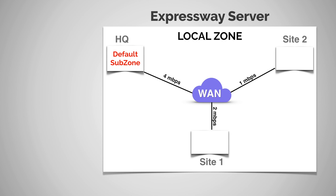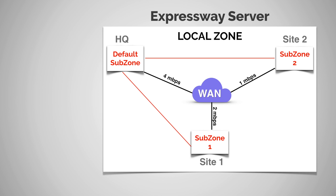In our Expressway, we're going to build different subzones to represent each location — subzone one for site one and subzone two for site two. Remember, when we create additional subzones, we get links between each of these subzones and the default subzone automatically. We won't get an automatic link between subzone one and two, but we can easily add that manually. What you see in red is the virtual topology on top of the physical network shown in black. Because I have different bandwidth requirements at each location, I want to put specific bandwidth restrictions on each location respectively.